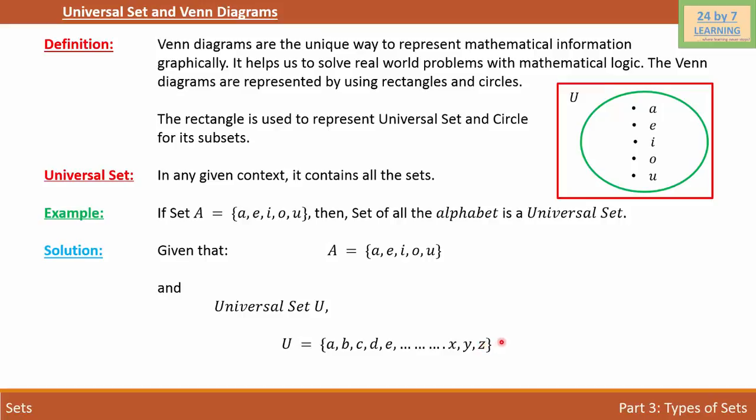As you can see, Universal Set contains all the alphabet, and set A is a part of Universal Set, which represents vowels only.